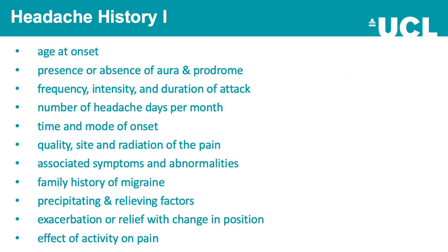It's important to take specific details when taking a headache history. Consider the age at onset, presence or absence of aura and prodrome, frequency, intensity and duration of the attack, number of headache days per month — a headache diary is helpful — time and mode of onset, quality, site and radiation of the pain, associated symptoms and abnormalities, family history of migraine, precipitating and relieving factors, exacerbation or relief with change in position — particularly important if raised intracranial pressure is suspected — and the effect of activity on pain.